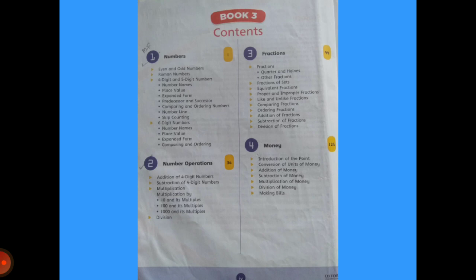In Chapter 1, we'll be studying about numbers: even and odd numbers, Roman numbers, number lines, skip counting, and six-digit numbers. Chapter 2 is about number operations. There are four types: addition, subtraction, multiplication, and division.